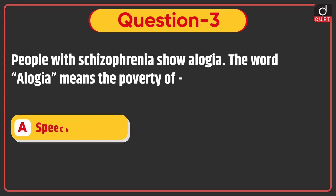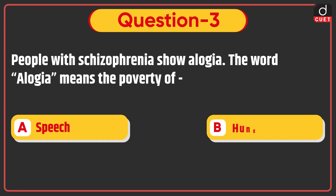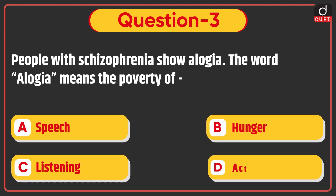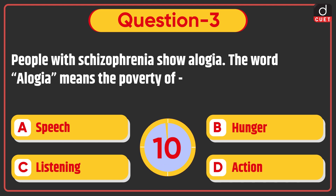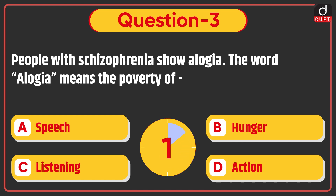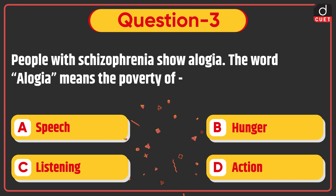Next question is: People with schizophrenia show Alogia. The word Alogia means the poverty of — speech, hunger, listening, or action? The correct answer is option A, speech.